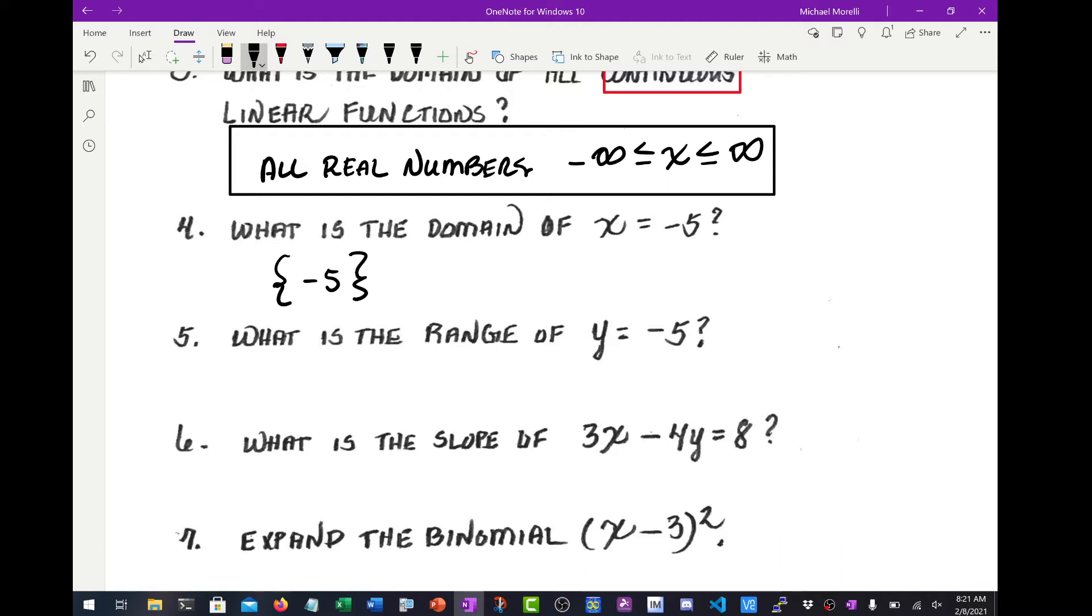Number 5, another bit of a trick question. What is the range of Y equals negative 5? Well, Y equals negative 5 is a function, but it's a perfectly flat horizontal line passing through 0 comma negative 5 on the Y axis. So again, the range is negative 5.